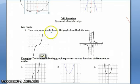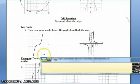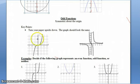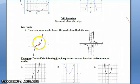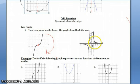Odd functions have symmetry about the origin. That means if we could put a pen right in the middle of our function and flip it upside down, it would look exactly the same — right would go up, left would go down. If you turned it upside down it would still look exactly the same. That's what we call symmetry about the origin: if you pivot it around the origin, it looks exactly the same.